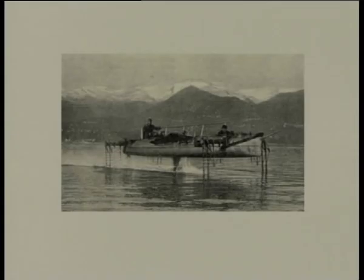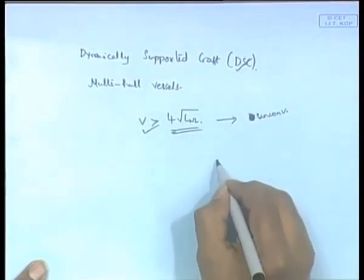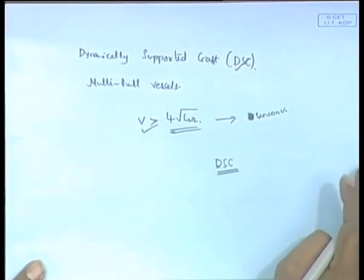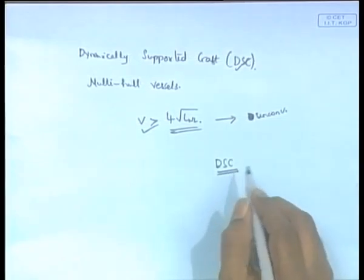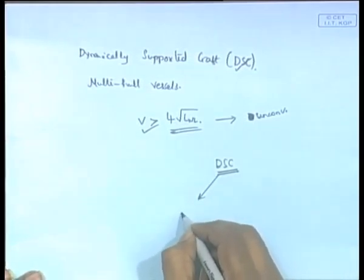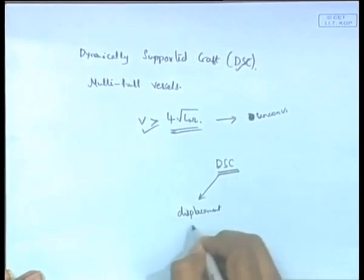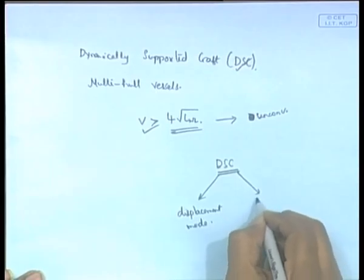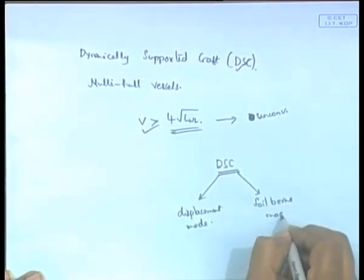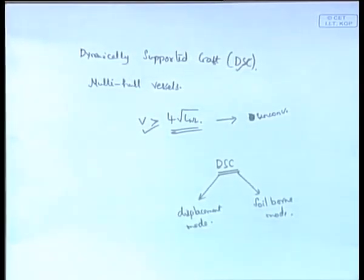As I promised in a few lectures back, I have some slides of what we call hydrofoil boards — that is, dynamically supported crafts. We have different types of dynamically supported crafts. A dynamically supported craft can travel in two modes: one called the displacement mode and the other called the foil-borne mode.